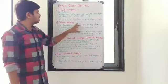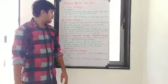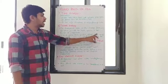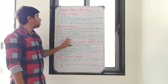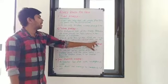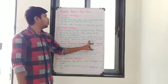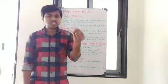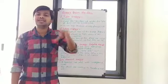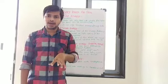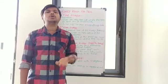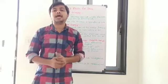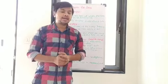The second limitation of wave energy is that since some parts of the plant are inside the water, corrosion of those parts can also occur. Due to the water, corrosion may occur, which is also one type of limitation.